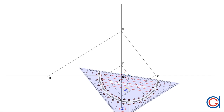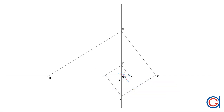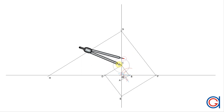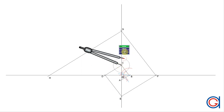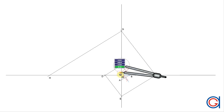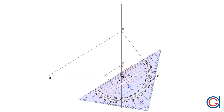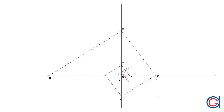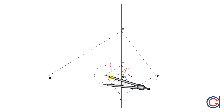We draw the perpendicular bisector of line segment AB, and these two blue lines intersect at a new point which we will call 1. This will be the center point of the first arc of the spiral. The perpendicular bisector of BC cuts the angular bisector at B at a new center which we will call number 2.